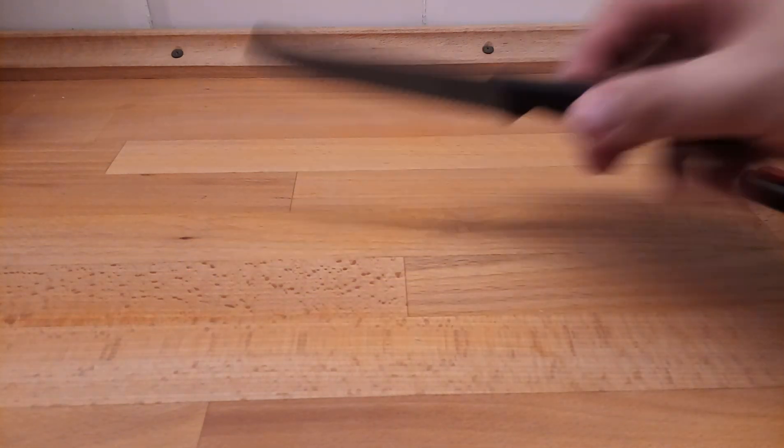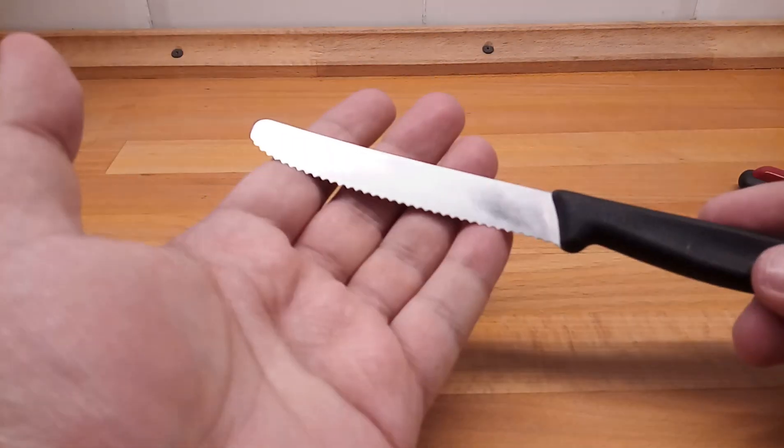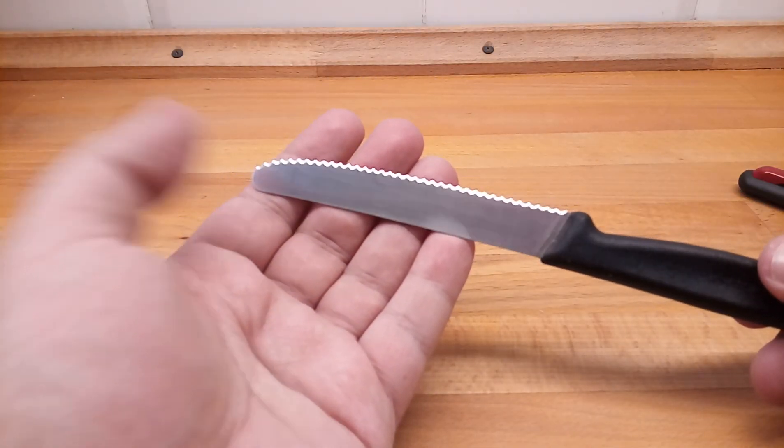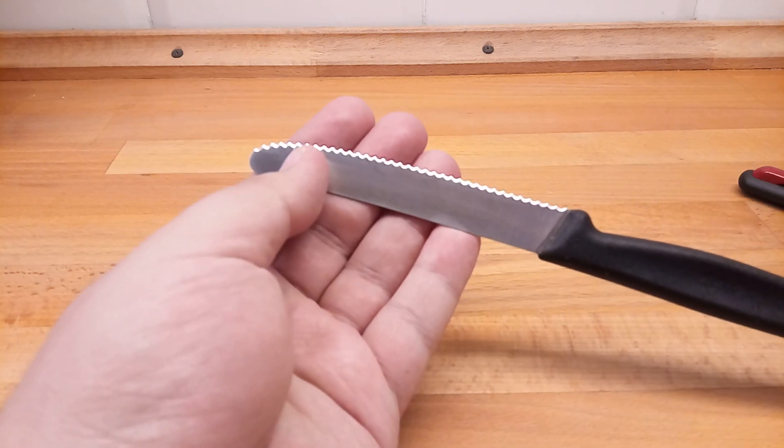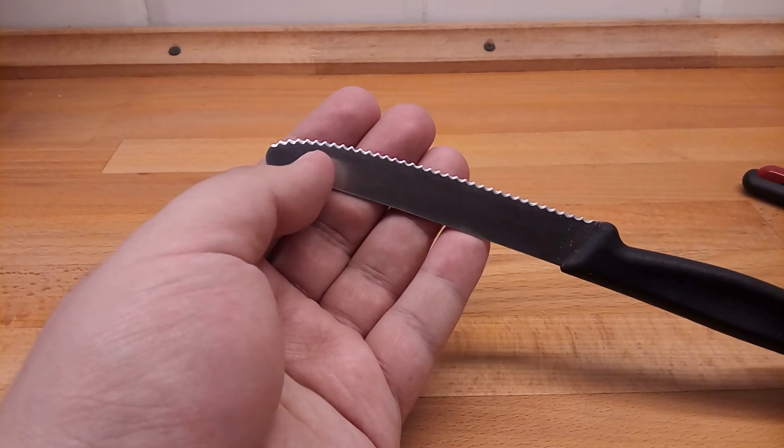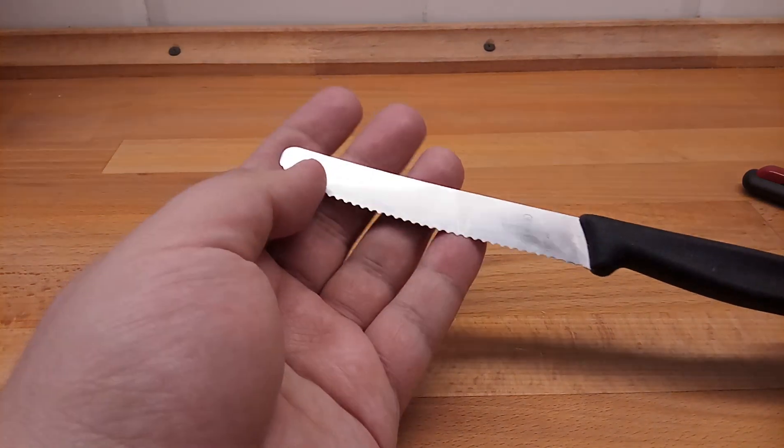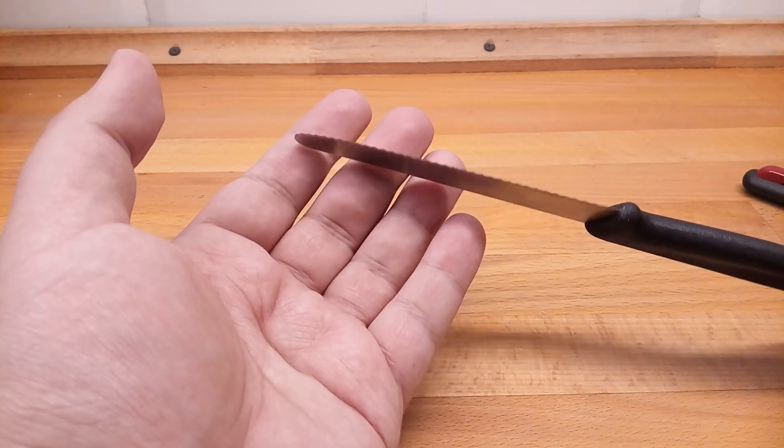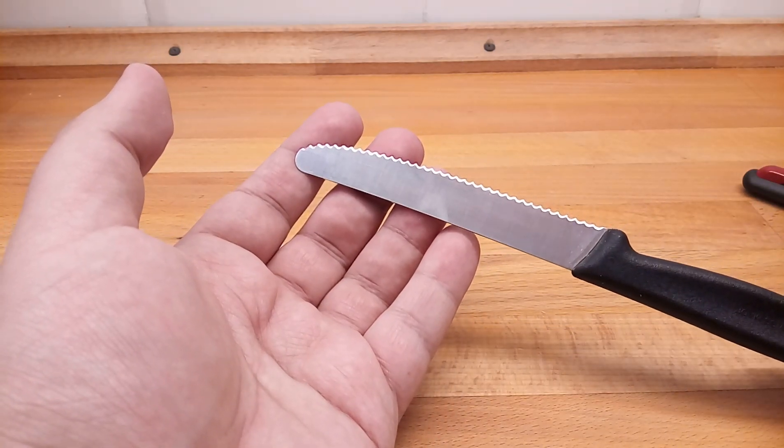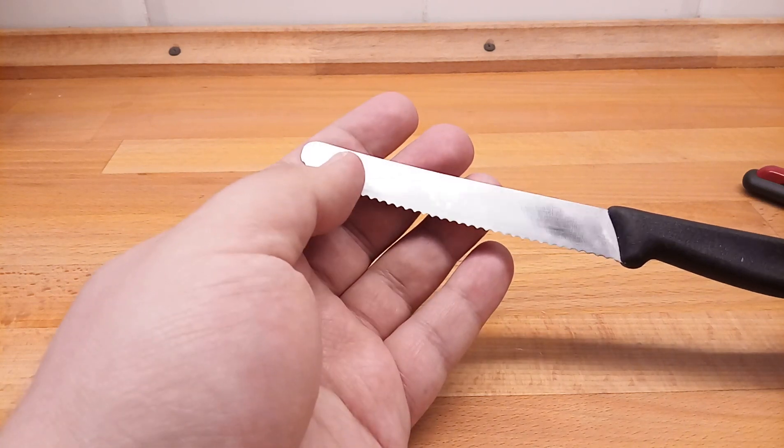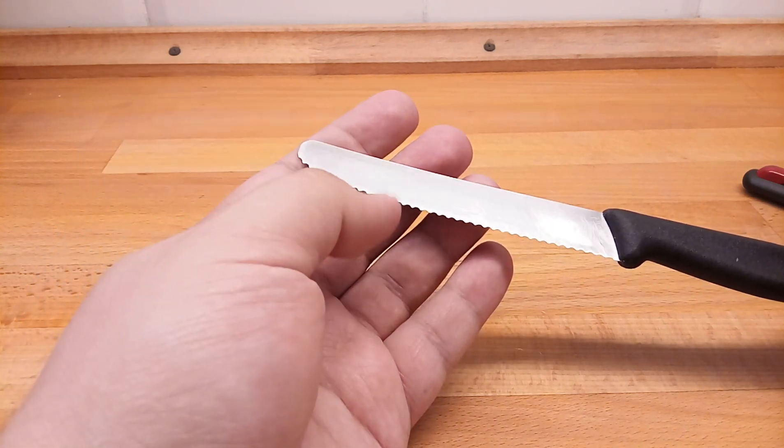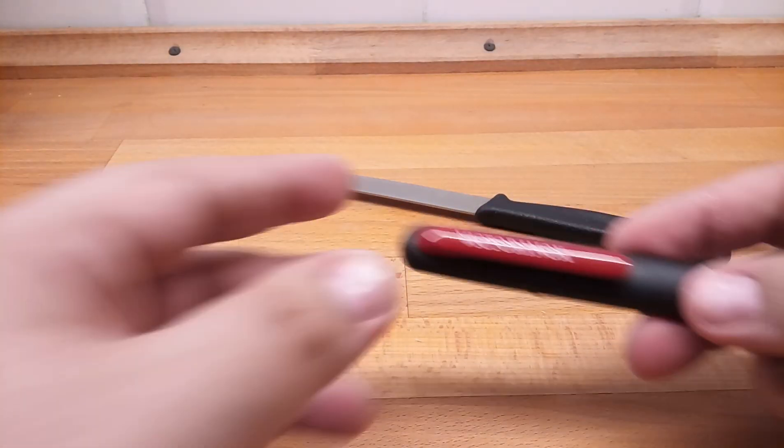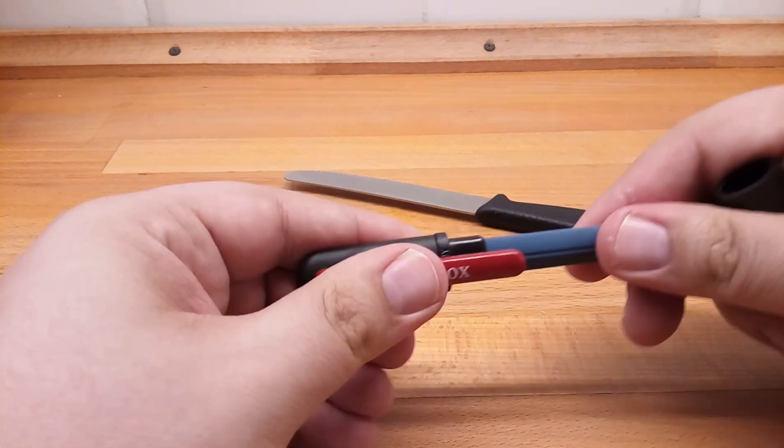As you can see, this is a serrated knife, chisel ground. Only one side has the bevel. I'll try to focus - yes, you can see. And this serration is different from the serrations that, let's say, Spyderco and Cold Steel are using. This is much more wavy, it's not pointy.